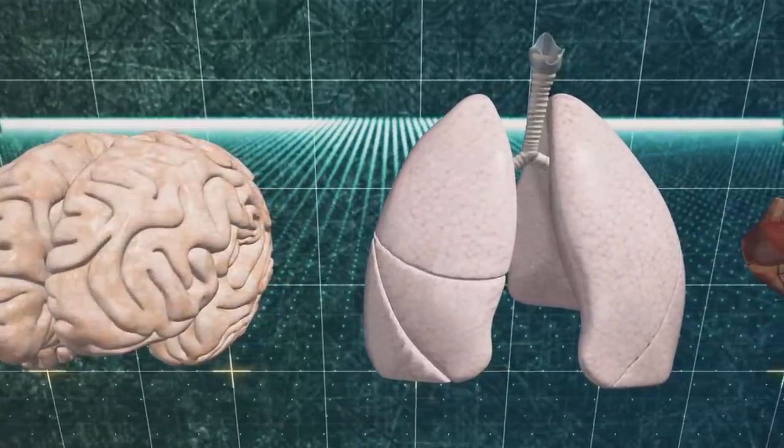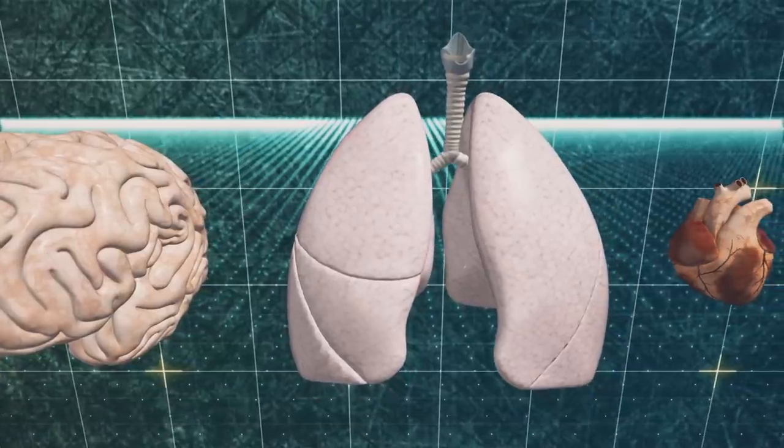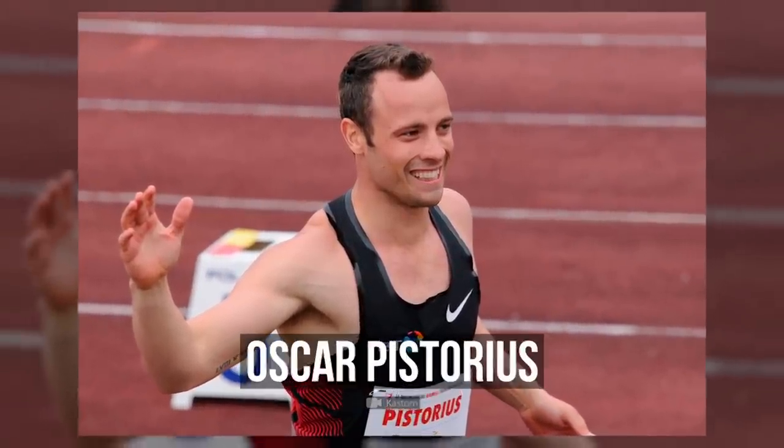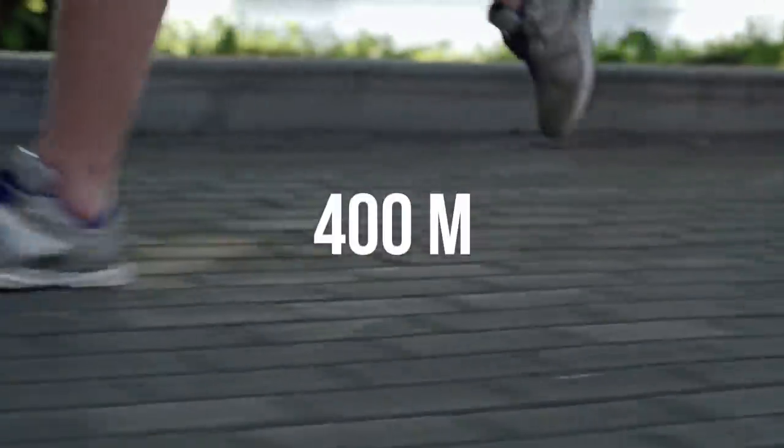Today, an artificial human organ is no longer John Silver's wooden leg or Captain Hook's universal weapon. This is Oscar Pistorius. In the 400-meter race, he performed much better than his completely healthy competitors.